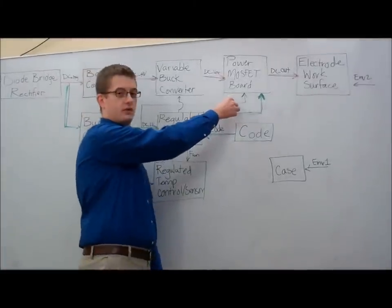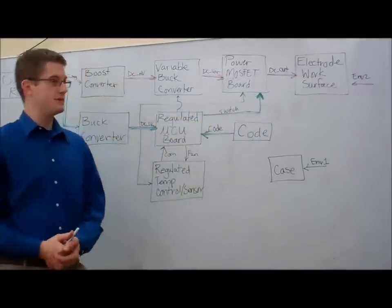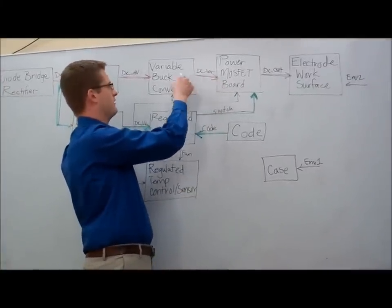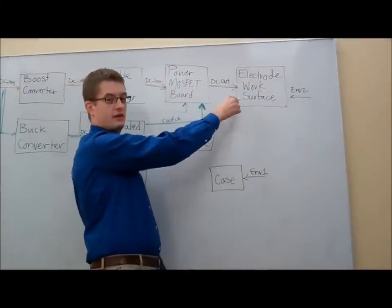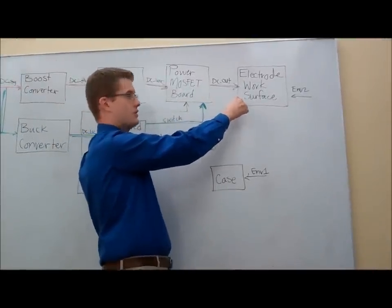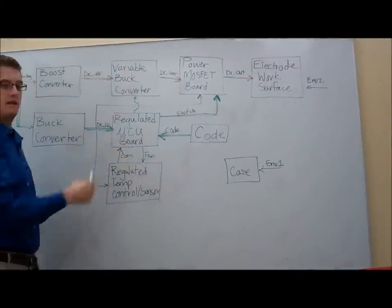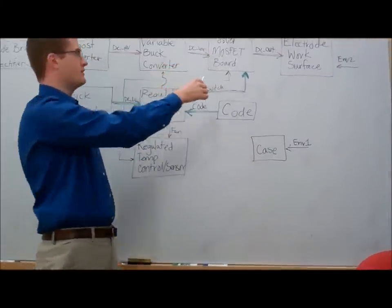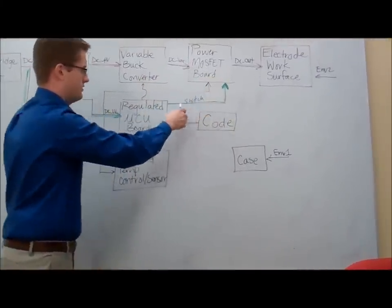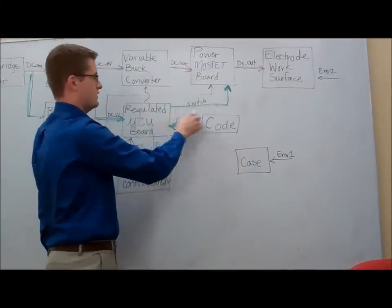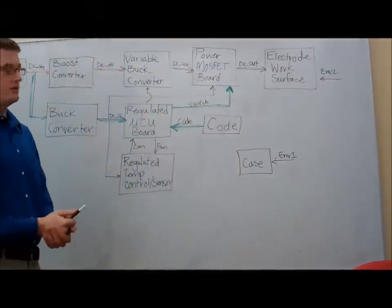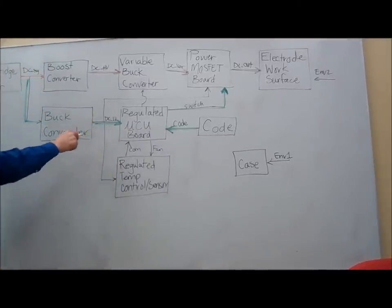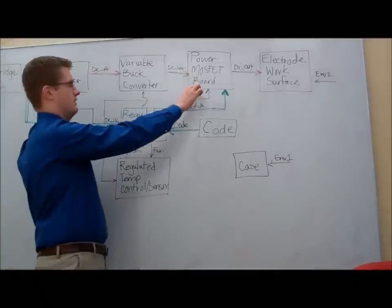This variable DC output is fed into the power MOSFET board. The power MOSFET board is a critical component in our high voltage management system. This board will take a variable voltage DC from the variable buck converter and control which electrode on our work surface will be turned on or turned off. To make this board work we integrate a series of driver chips and high voltage switching FETs. The driver chips turn on and off the signal based on the switching signal coming up from the regulated MCU board. And in order to power the driver FETs we pull voltage through this buck converter to power that.